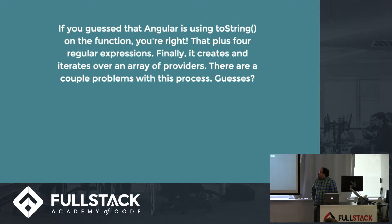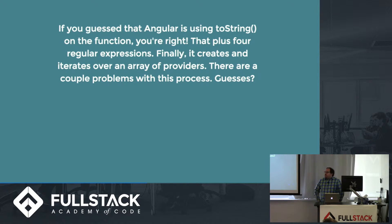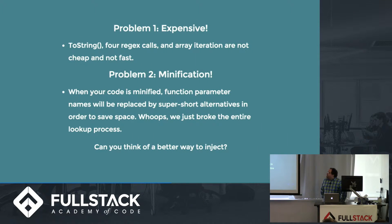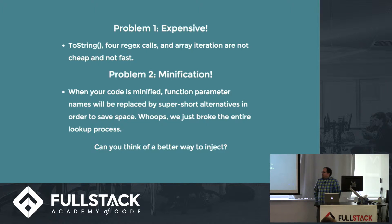This is called implicit dependency injection, because we're not explicitly injecting anything — it looks like any other function. What is actually going on? Angular is taking that function, turning it into a string, applying four different regexes to it, and then iterating over an array of providers to find what providers you're actually injecting into your controller. There are a couple problems with this process which you might be able to guess.